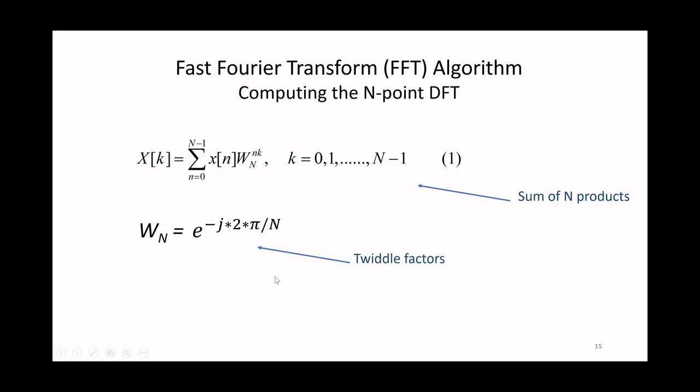The computation of the N-point DFT involves the following expression as shown here, and it can be viewed as the sum of capital N products. For an N-point DFT, the coefficients involved in the product are called the twiddle factors. x of n are the input time domain samples, x of k are the DFT output values which are typically complex values. If we consider the sum of N products, we see that we need N squared multiply-adds for an N-point DFT. We need capital N multiply-adds for each output x[k], and then we have capital N values for x[k], which leads to this number N squared for the number of computations required.